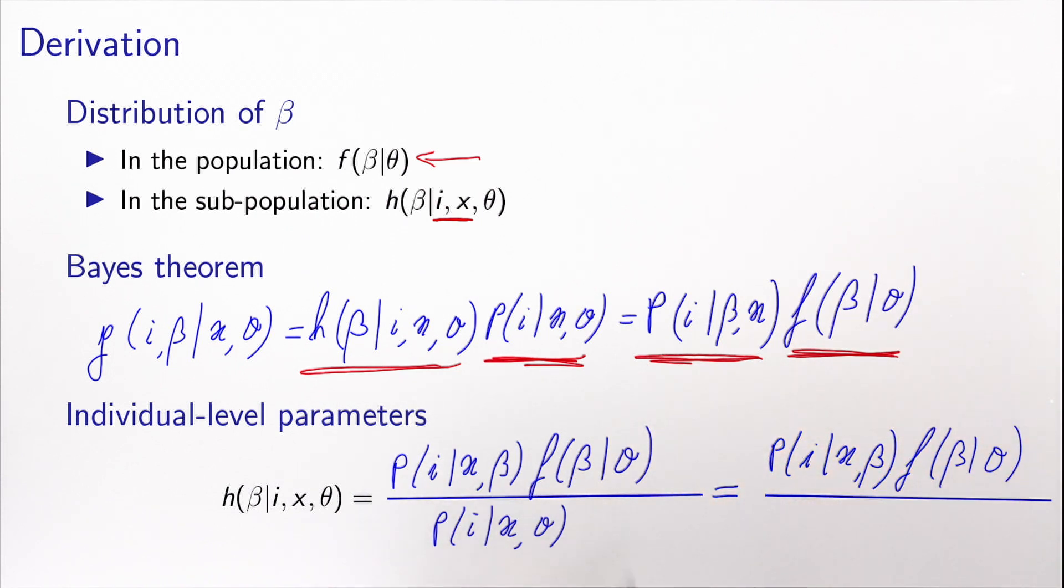And in the denominator, we have the choice model, which is obtained by the integral over beta of p(i|x,beta) f(beta|theta) d beta.